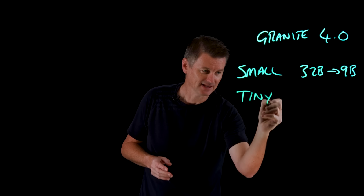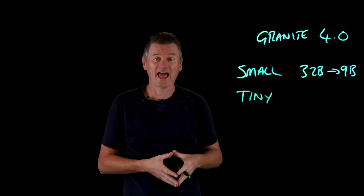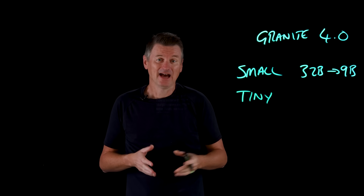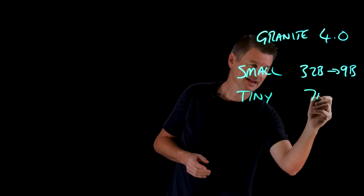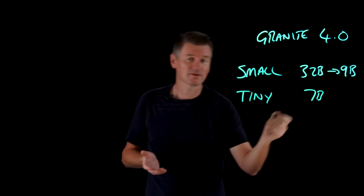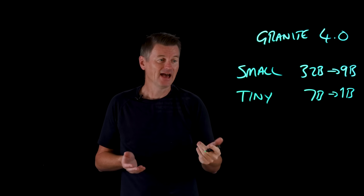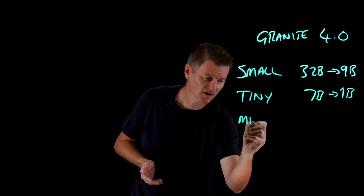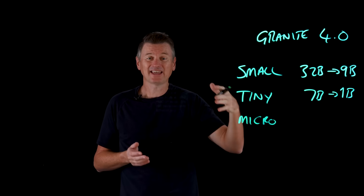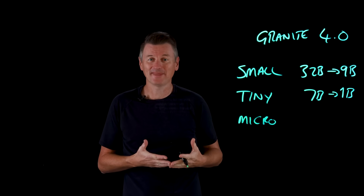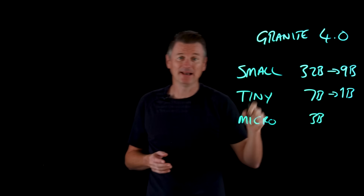Then there is the Tiny model. Tiny is built for low latency, for local and edge use cases. Like Small, it's another mixture of experts model, with 7 billion total parameters and 1 billion active parameters. And then there are a couple of Micro models as well. Like Tiny, they're intended for lightweight local deployments, but they use a dense architecture with 3 billion parameters.